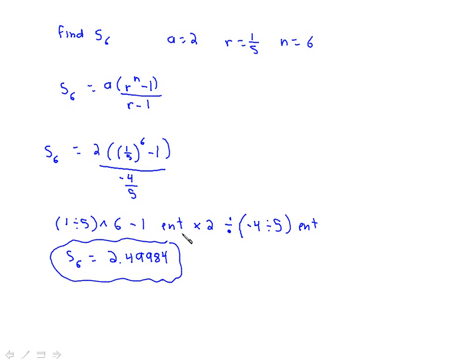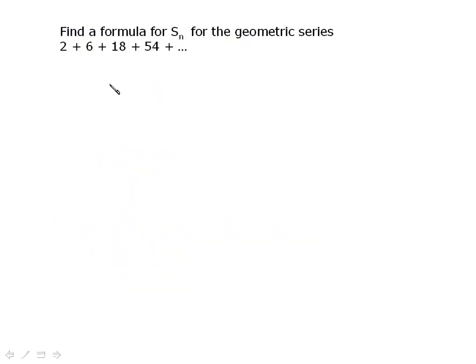Let's try another one. Find a formula for Sn for the geometric sequence 2 plus 6 plus 18 plus 54 plus whatever. We found formulas for Tn before. Now, we find formulas for Sn. And here is our formula. So, all we do is we keep the n open. We identify the a as 2. And then, your common ratio, 6 divided by 2, is 3. And then, you just substitute that information in. So, you are not looking for an individual sum. You're looking for a formula that will work for all values.